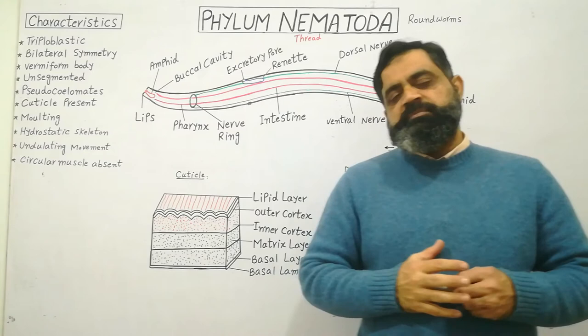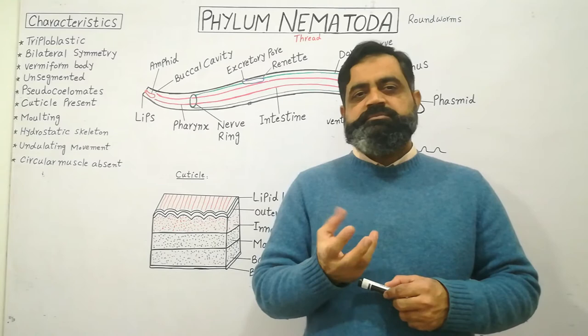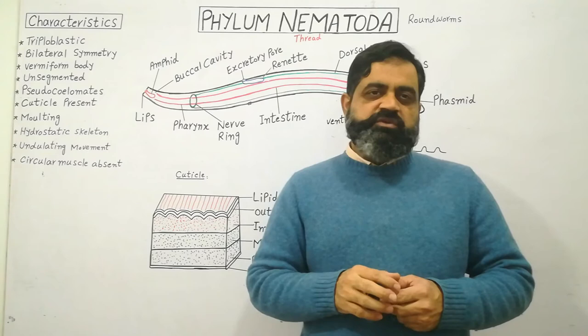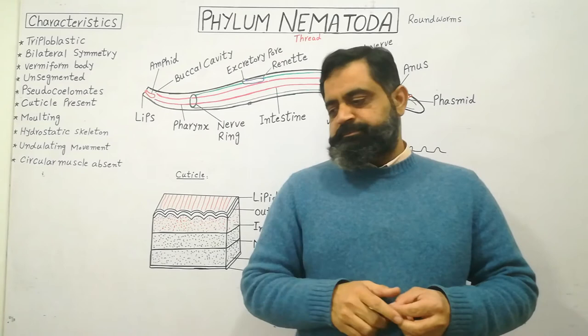The surface of the cuticle is sometimes smooth, while sometimes it contains bristles, spines, bumps, or other surface features. This cuticle helps protect the animal from digestive enzymes and other environmental dangers.